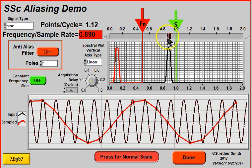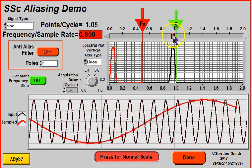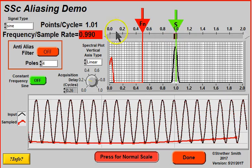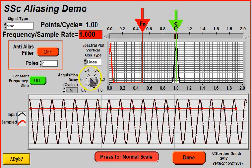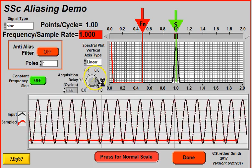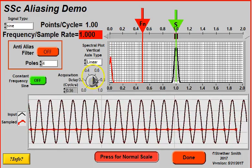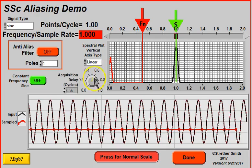So what I'm going to do is continue out to higher and higher frequency, to precisely one point per cycle. And what I see now is that it looks like a DC signal. And that's exactly what my spectrum is showing here, zero frequency.